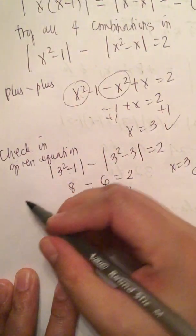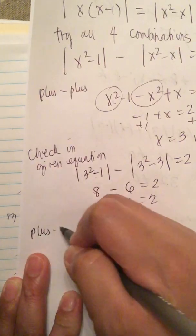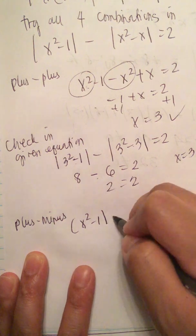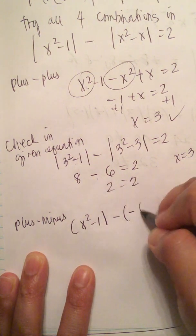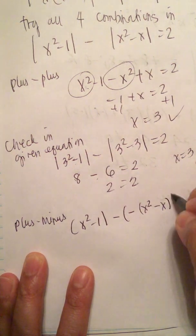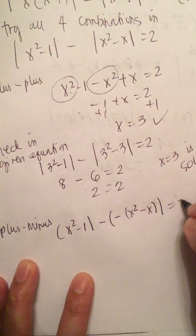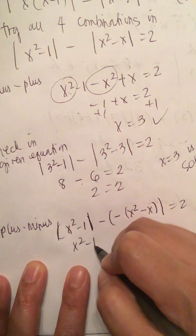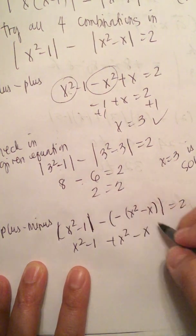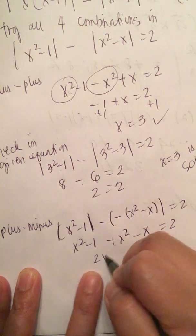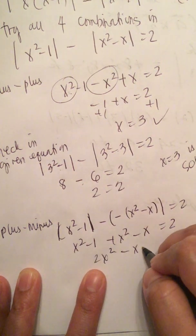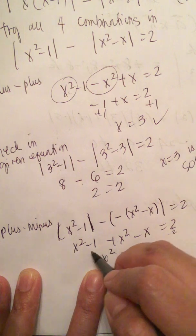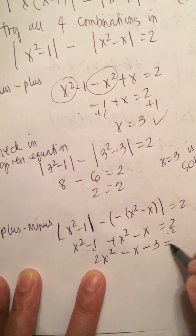Now let's try the plus, minus combination. We get x squared minus 1, minus negative x squared minus x, equals 2. So we get x squared minus 1 plus x squared minus x equals 2, giving 2x squared minus x minus 3 equals 0.